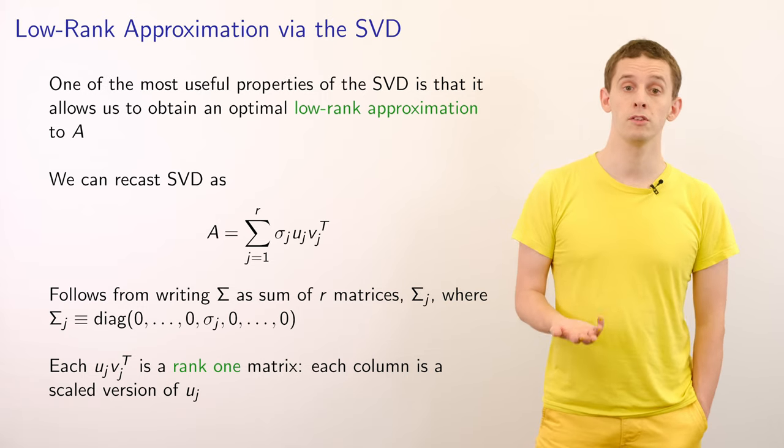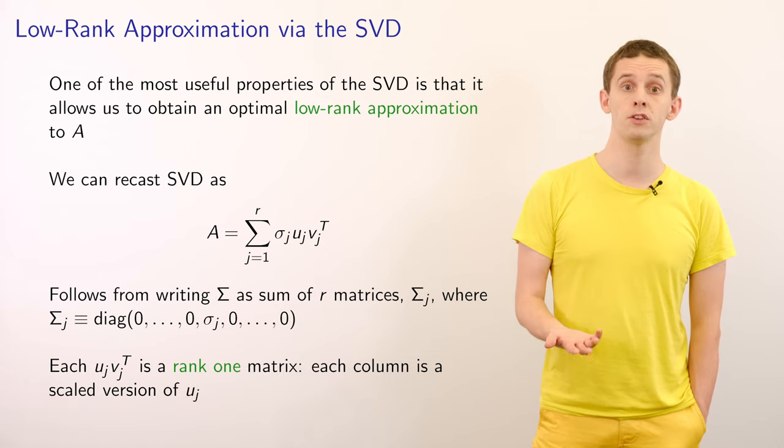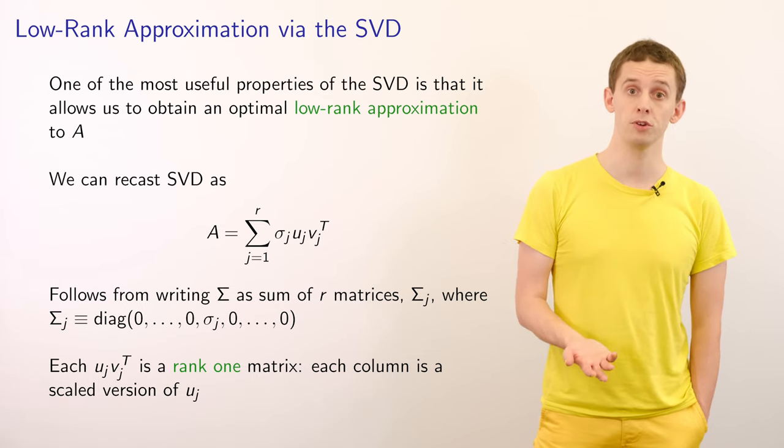We say that A is equal to the sum from j equal 1 to r of sigma j times uj times vj transpose, where r is the rank of our matrix A.